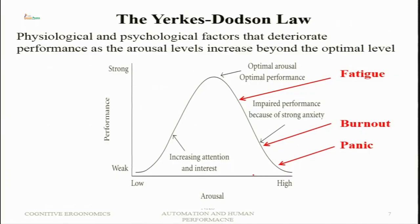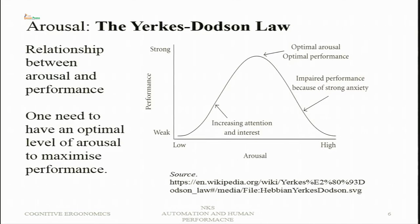As arousal goes further, the next stage is burnout — no more energy is left. Then, if arousal becomes very high, there is panic. This arousal level can be considered as a level of stress, and it can be measured in terms of physiological consequences such as body temperature. Those individuals who have a high body temperature during the middle of the day will perform at their best during the middle of the day; others may have peak body temperature early in the morning or late in the evening, and performance will be best at those times.